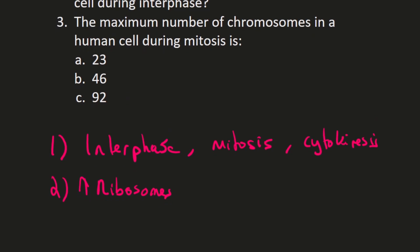Question three: the maximum number of chromosomes in a human cell during mitosis — is it 23, 46, or 92? In a normal human cell not undergoing mitosis, there are 23 pairs or 46 individual chromosomes. However, during mitosis the chromosomes all replicate and are doubled, so the number goes from 46 to 92 individual chromosomes — or 46 pairs. The answer is 92 individual chromosomes. Hopefully everyone got those correct — see you in the next one.